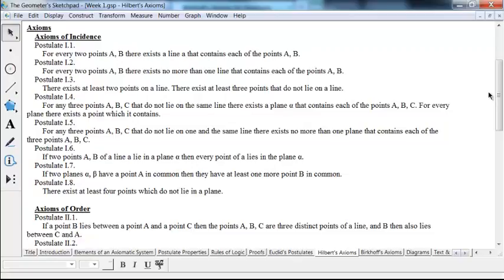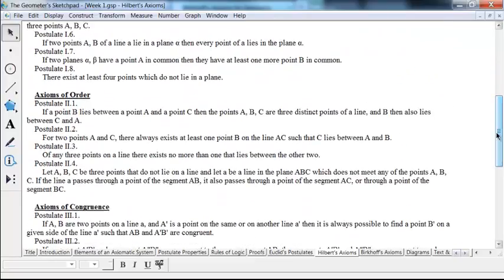So, postulate I3 says there exist at least two points on a line, and there exist at least three points that do not lie on a single line. And so forth. So, you can look at these postulates. We're going to examine these in more detail as we go through the course, but just to show you some of the kinds of things that Hilbert has in his postulates. Now, the next set of postulates, axioms of order, are basically properties of the undefined term between. And actually, I think pretty much all of these have something to do with betweenness.